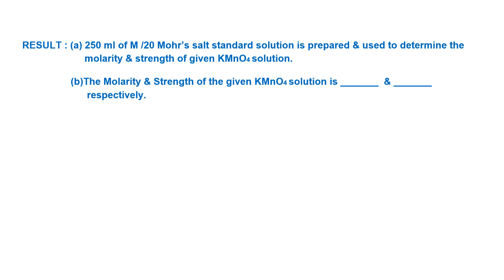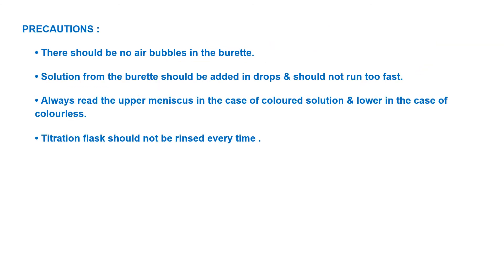For the result: Part A — 250 ml of M/20 Mohr salt standard solution is prepared and used to determine the molarity and strength of the given KMnO4 solution. Part B — the calculated molarity and strength of KMnO4 solution are to be filled in. Precautions: ensure no air bubbles in the burette — if noticed, run the solution to remove them. Add solution from the burette in drops, not too fast. Always read the upper meniscus for colored solutions and lower meniscus for colorless ones. The conical flask should not be rinsed every time, as residual water may dilute the solution and prevent concordant readings.